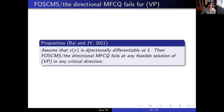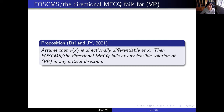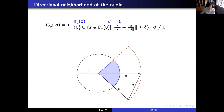We wonder whether we can apply this to bi-level programs. Unfortunately, as we know, MFCQ does not hold for the value function reformulation. We tried, and we showed that the directional MFCQ still fails in any critical direction. So we need another approach.